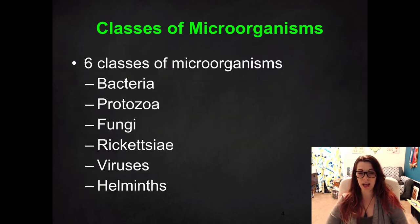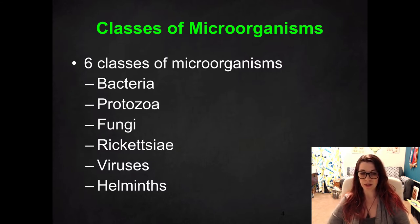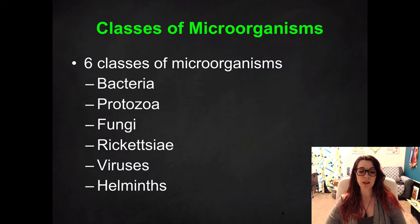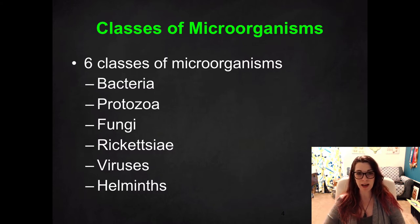Let's talk about the six classes of microorganisms. The first is bacteria. The second is protozoa, and we'll talk about the difference between protozoa and bacteria when we get there. The third is fungi. The fourth is rickettsia, which is a subcategory of bacteria, but based on how they're transmitted, we'll talk about them separately. Then viruses. And the last category is helminths. We're going to spend time on each of these six classes as we go through the nine weeks.